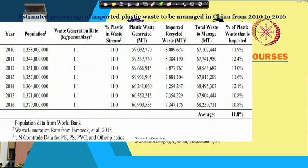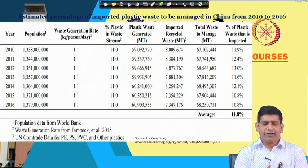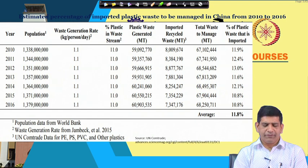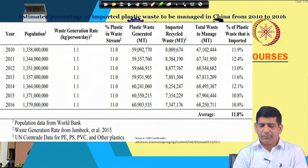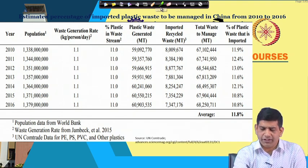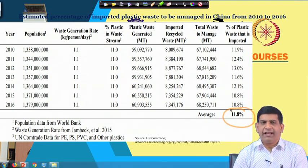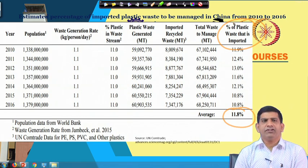There have been some calculations done in terms of how much waste was really imported by China. They took population data from the World Bank; waste generation data came from the paper by Gemback et al. from 2015; and there was UN data on polystyrene, polypropylene, PVC, and other plastics. Based on that, an estimate has been made of the plastic waste generated in the waste stream. The total comes out to be 11.8 percent — roughly 12 percent — which is the percentage of plastic that is imported and being managed in China.